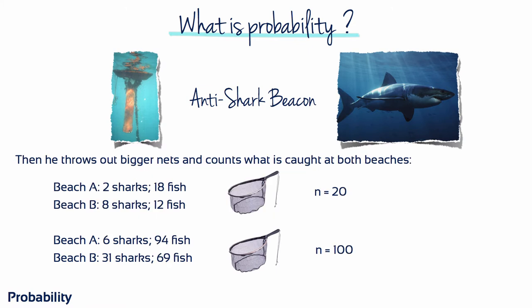He then throws out bigger nets and counts what is caught at both beaches. With a net size of n equals 20, he catches two sharks and 18 fish at beach A, whereas at beach B he catches eight sharks and 12 fish. Switching to a net size of n equals 100, he catches six sharks and 94 fish at beach A, whereas at beach B he catches 31 sharks and 69 fish. Given these sample results and the proportion of sharks to fish, it seems probable that the beacon was placed at beach A, which has by far the fewest sharks.